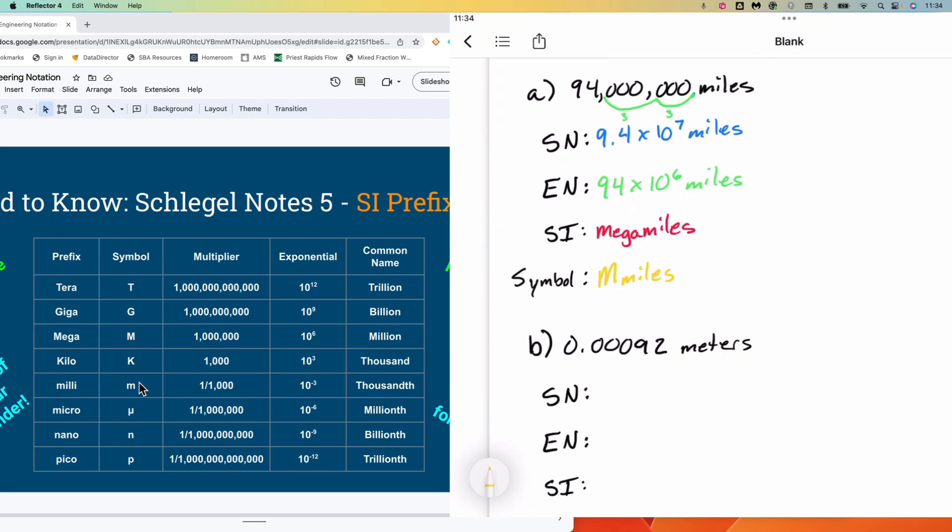Again, remembering that with engineering notation, we can only move in jumps of three. And our exponent is always going to be a multiple of three. In our case, three, six, nine, or twelve, either positive or negative, depending on the size of what we're talking about.